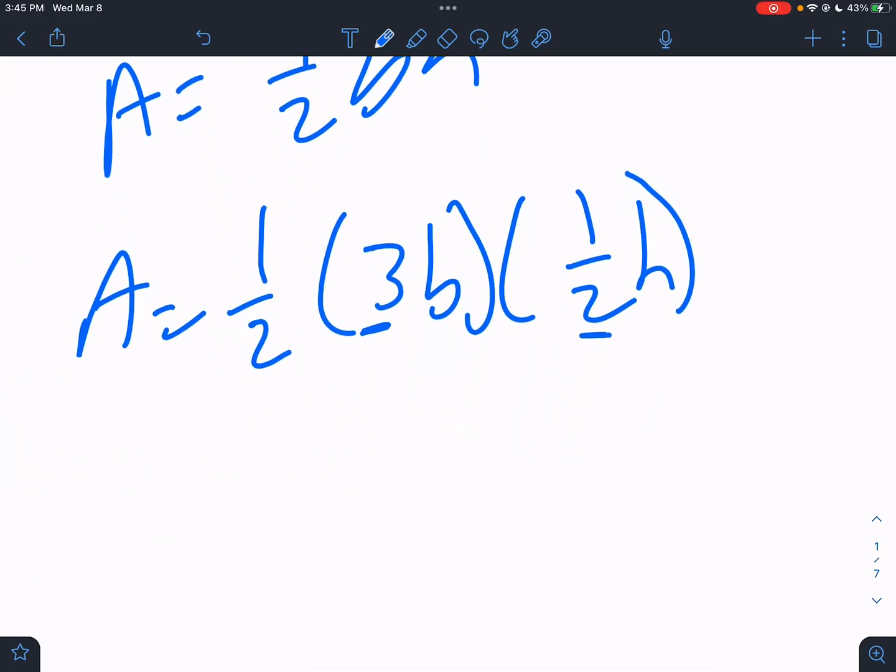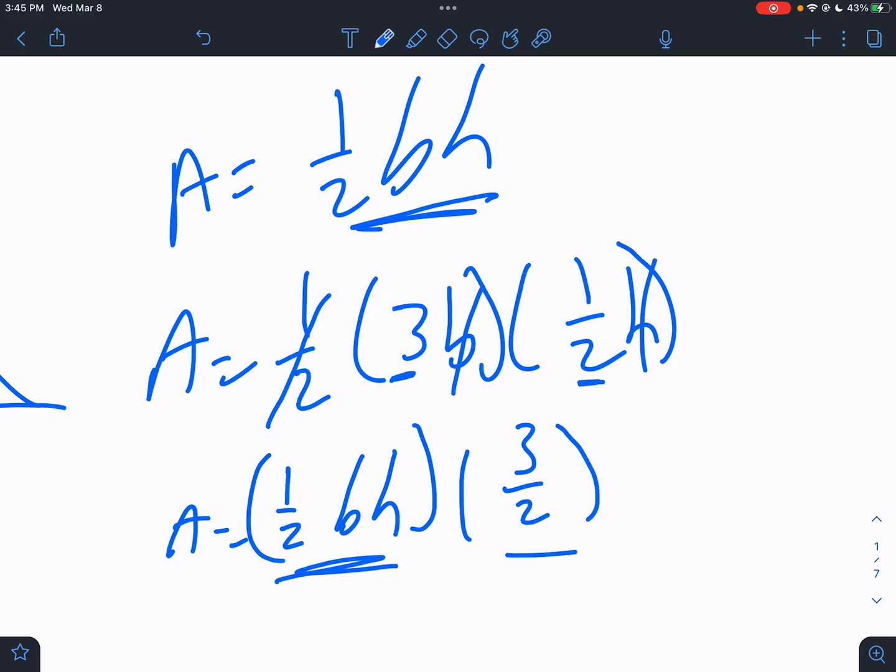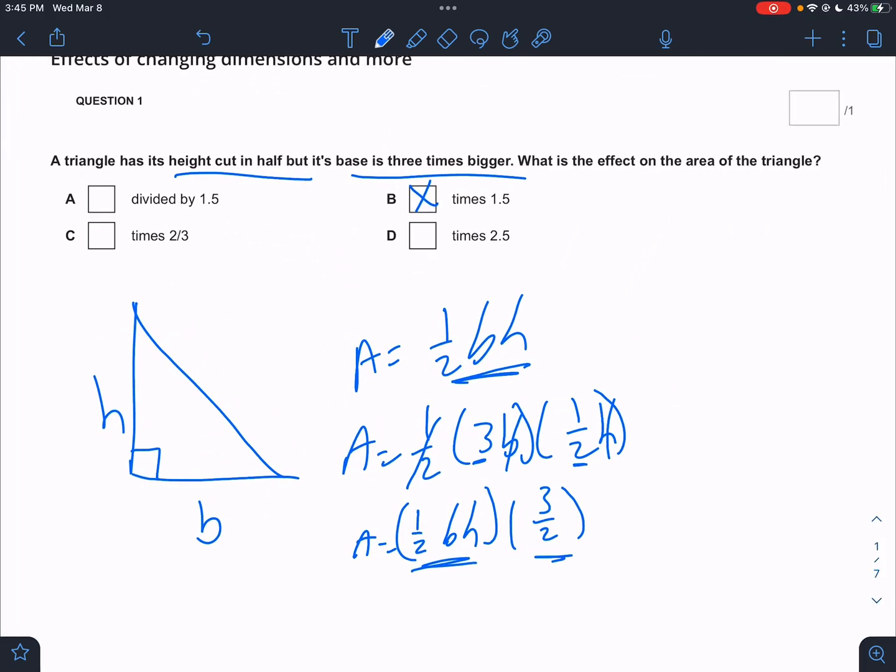Well, what is three times a half? So we would have one half base times height still, right? One half base times height. But then we have a three times one half left over. That would be times three halves. Isn't that just the original area times three halves or times 1.5? Sure is.